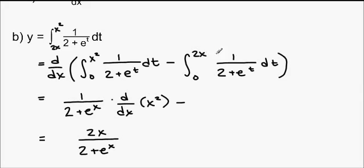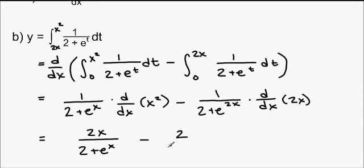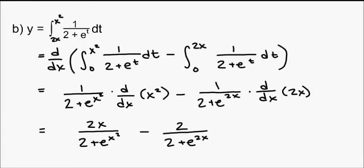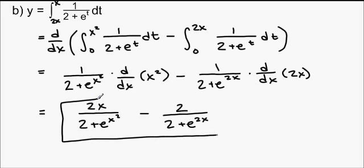Now minus. I'm going to put my 2x in for t. So 1 over 2 plus e to the 2x times, I'm going to have to do the same thing here, the derivative of my upper bound. So the derivative of 2x is 2. And this should have been x squared in here. And this is my answer. Not going to try to simplify that anymore.